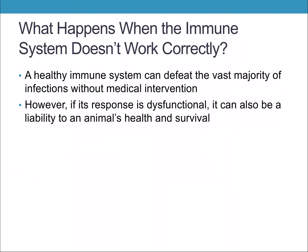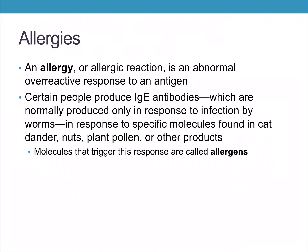What happens when the immune system doesn't work correctly? A healthy immune system can beat most things without medical intervention. However, a dysfunctional response can be a liability to an organism's health and survival. One example is allergies — an allergic reaction is an abnormal, overactive response to an antigen. Certain people produce IgE antibodies, which are normally a response to worms, in response to things like pollen, nuts, or pet dander.